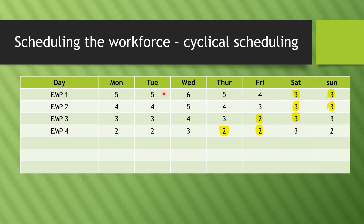For Doctor 4, the remaining demand reduces: Monday 2, Tuesday 2, Wednesday 3, Thursday 2. Since Doctor 3 is not working on Friday, that demand carries over; Saturday demand also carries over, while Sunday demand reduces since Doctor 3 was working then. Looking at the demand pattern for Doctor 4's week, we can give Monday and Tuesday off, or Thursday and Friday off. In this example, Thursday and Friday off are chosen for Doctor 4.